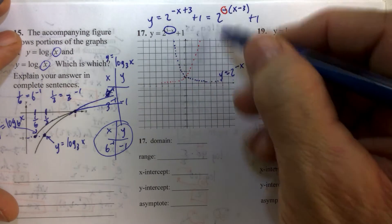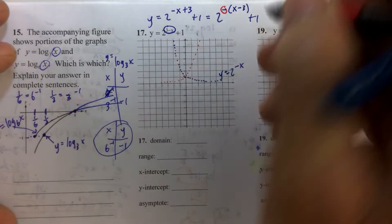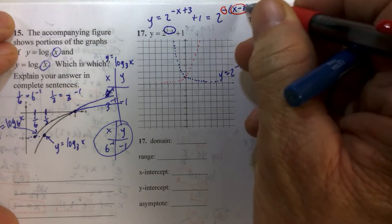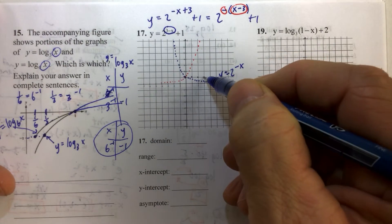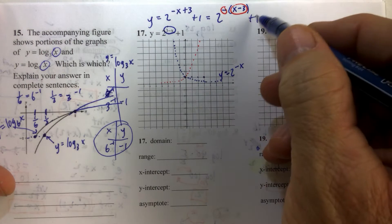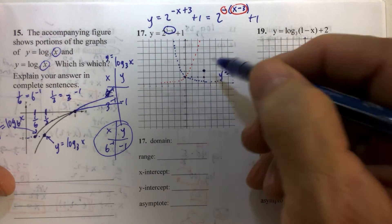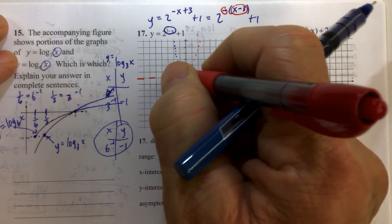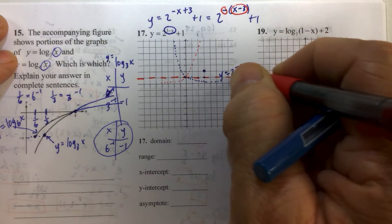After we've reflected this parent function about the y-axis, we're going to now move it to the right. So that x minus 3 in place of x means we're going to move it to the right three units. We're going to go right one, two, three. And then this plus one here means we're going to go up one.